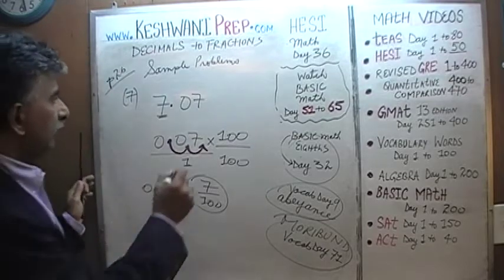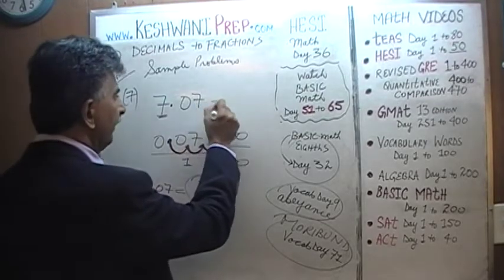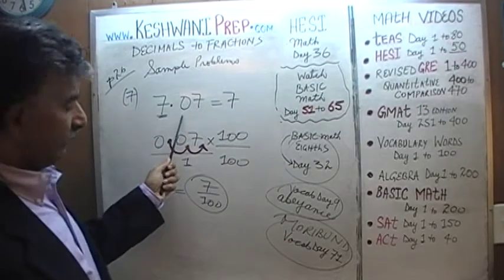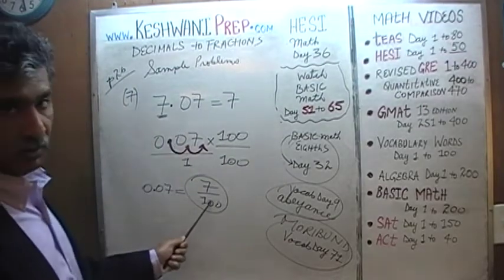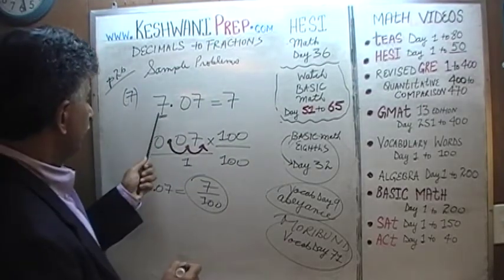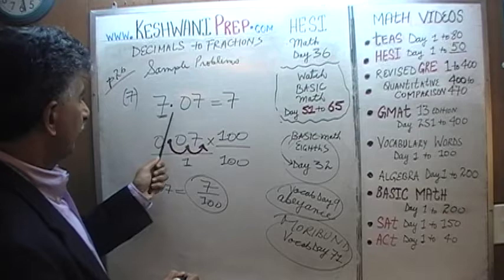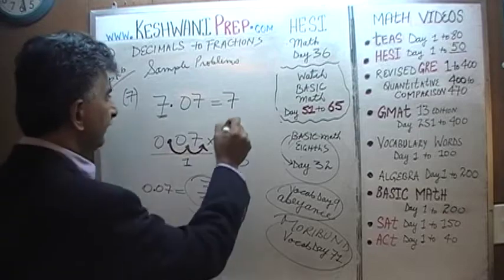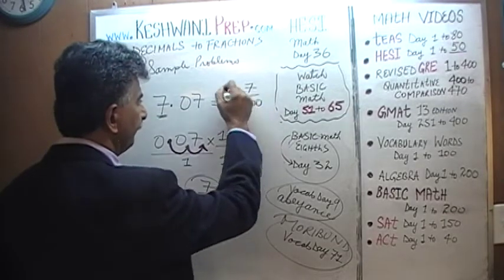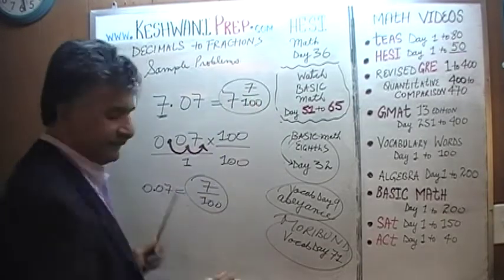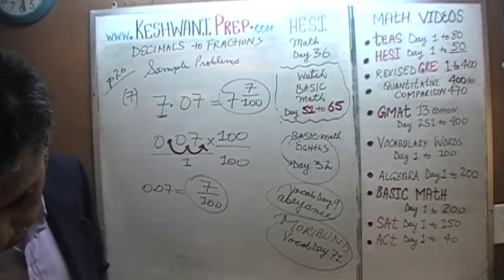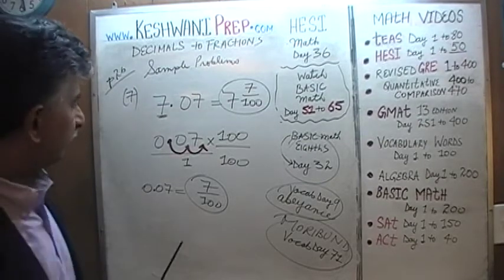So we have the whole number 7 and 0.07, which we just found out is 7 over 100. So it turns out that 7.07 is nothing but 7 and 7/100.